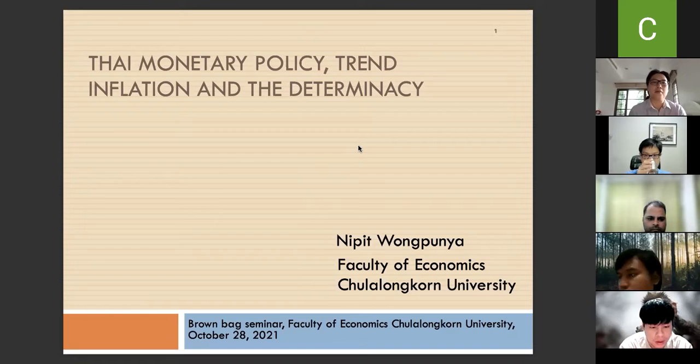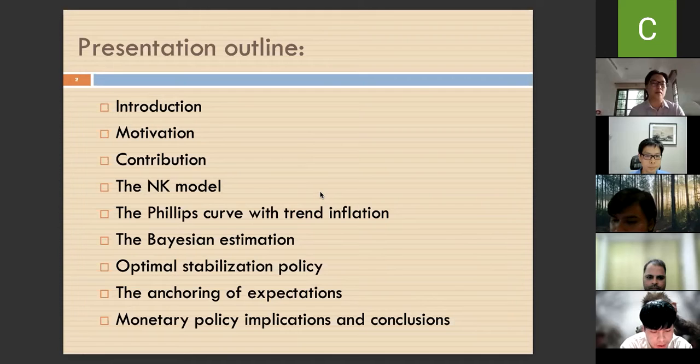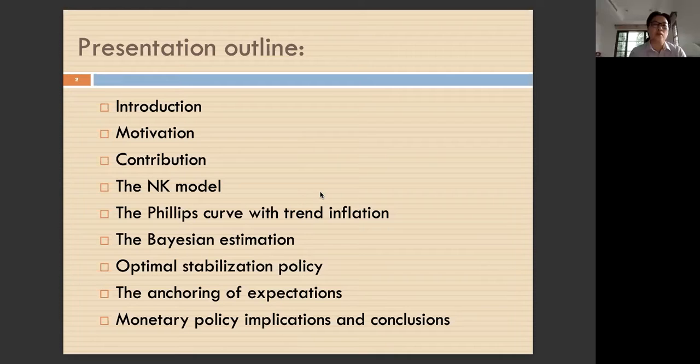Today I'm going to present Thai Monetary Policy, Trends, Inflation and Determinacy. The outline of my presentation: we start with introduction, motivation and contribution, look at the models, then derive the Phillips curve with trend inflation, estimate the model using Bayesian techniques, look at optimum stabilization policy, then issues of anchoring expectations, and wrap up with implications for monetary policy and the conclusion.